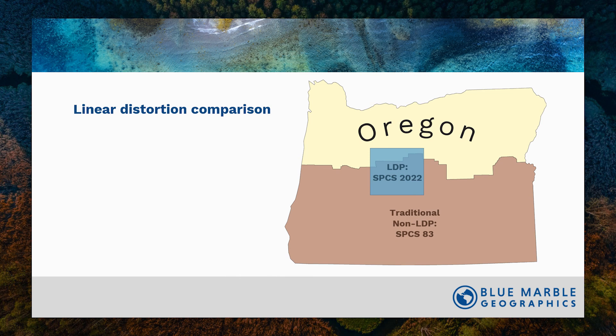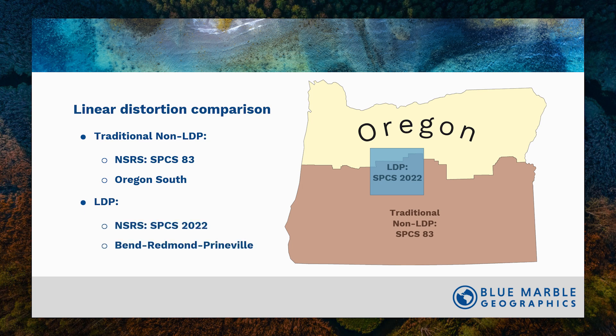Let's look at an example. We have a traditional non-LDP state plane coordinate system — 83 Oregon South — shown in brown. And then we have the new low distortion projection, the state plane coordinate system of 2022 for Bend, Redmond, and Prineville, shown in blue. You can see that the LDP is a smaller area than the older SPC 83.